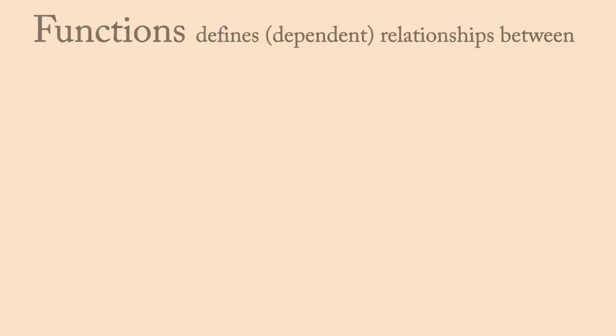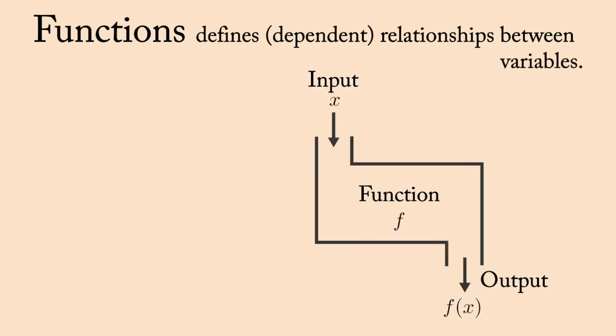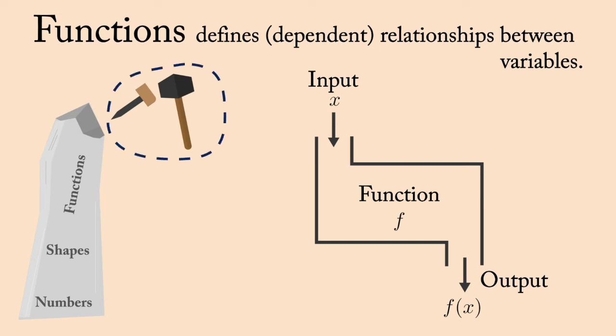Now, let us move on to functions. A function is a mathematical object which defines a relationship between two variables. Every input has one output variable. Like a sculptor needs a chisel and a hammer to carve out a sculpture in stone, wood or bronze, mathematicians use functions to transform numbers, shapes and even other functions.